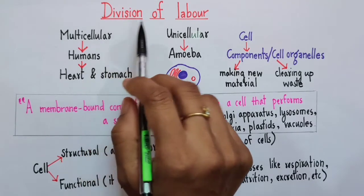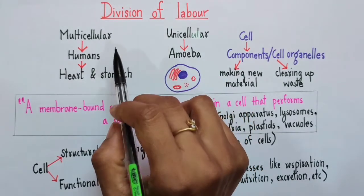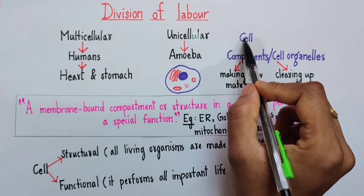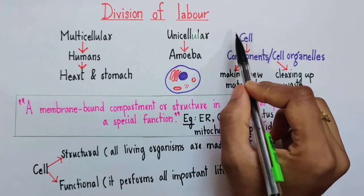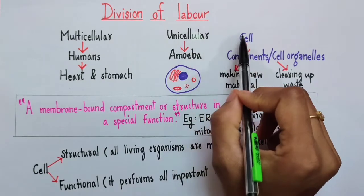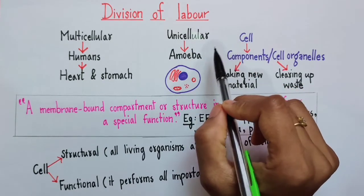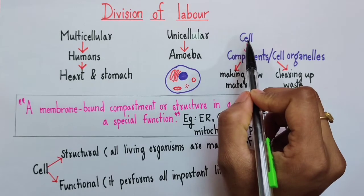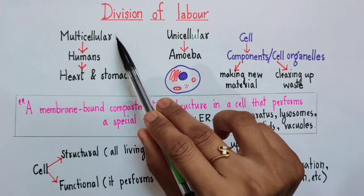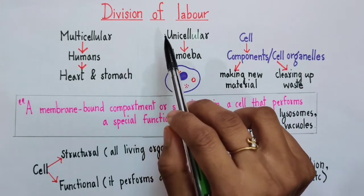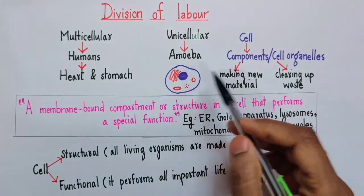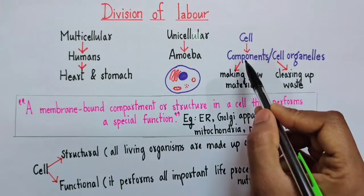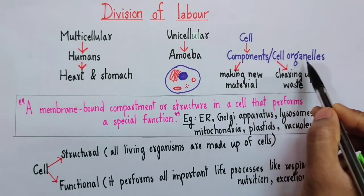This is what we call as division of labor, and this same concept is applicable to our cells. So what I want to convey here is that division of labor is seen in each and every cell, whether it be a cell of a unicellular organism like amoeba or a cell from a multicellular organism like humans. Now this is possible because these cells contain certain special structures or components which we call as cell organelles.